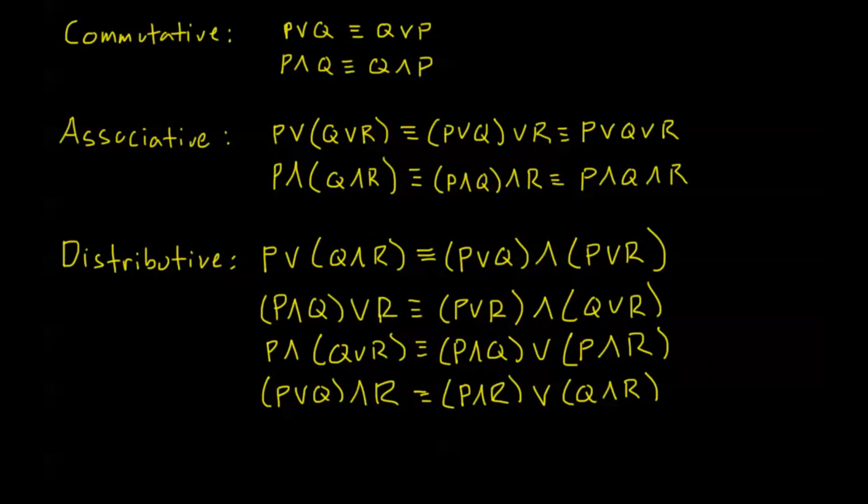Now I have one more law, and I don't have any space here, so I'm going to go ahead and get a new board. And this is called DeMorgan's Laws. And I have two of these laws, and these laws involve the negation. So if I have negation of the statement P or Q, this is equivalent to the negation of P and the negation of Q.